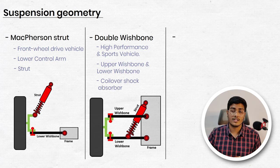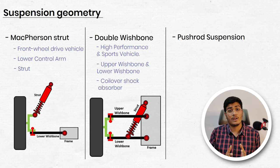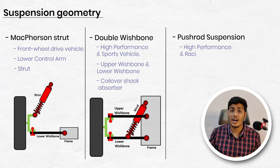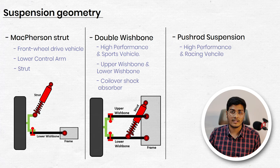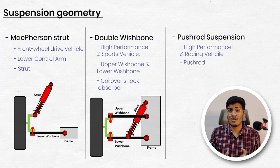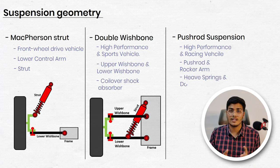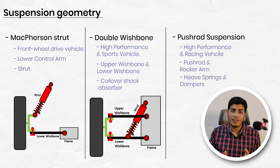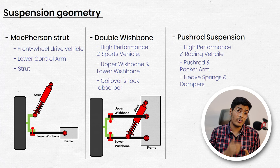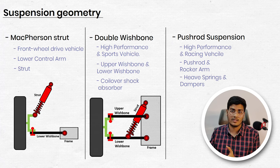Now the one which we are going to discuss today is the pushrod suspension geometry. This kind of geometry is generally used in high performance cars and racing cars. This geometry consists of control arms, rocker arms, springs, dampers, torsion bars, anti-roll bars, etc. It's possible that you don't know about these terms, so don't worry — we will be discussing about each and every component and then we will learn how pushrod suspension geometry works.